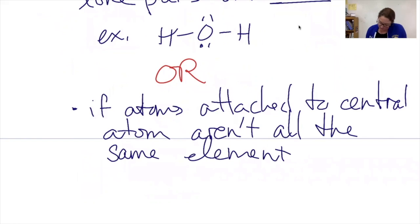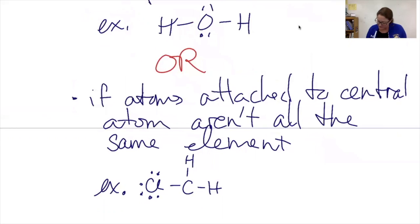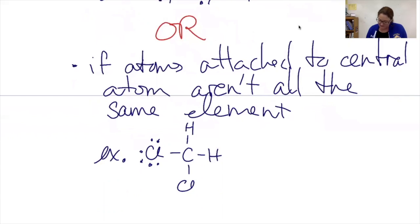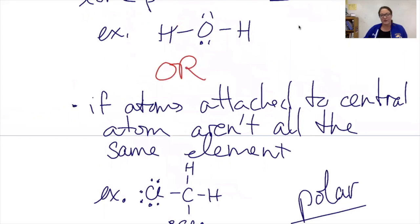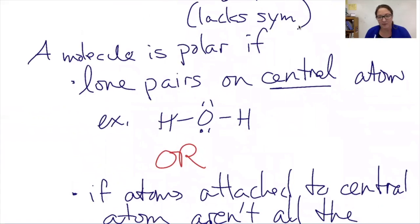If the atoms attached to the central atom aren't all the same element. So for example, if I have this structure which then has one more chlorine attached to it, since not all of the atoms attached to it are the same, this would also be a polar molecule. If either one of these things is true, in most every case the molecule is going to be polar.